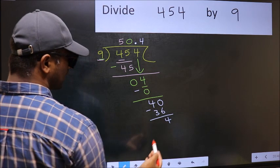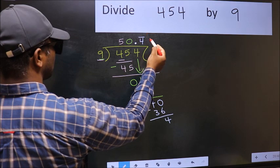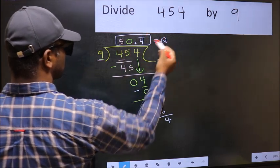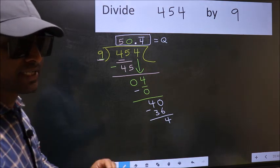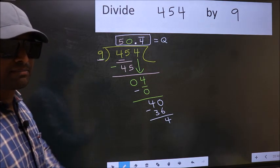We got 4 again. That means we get bar on this number. So this is our quotient. Did you understand where the mistake happens? You should not make that mistake.